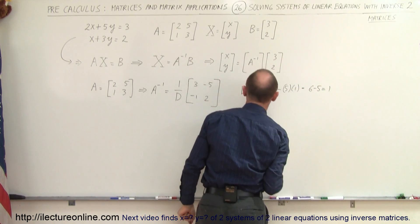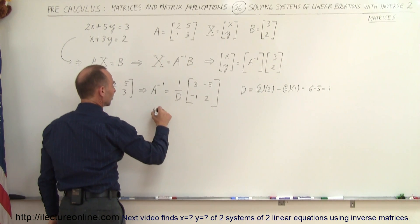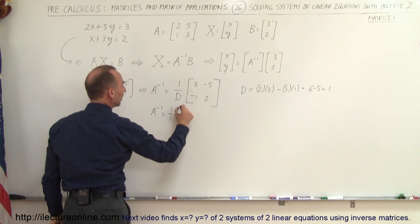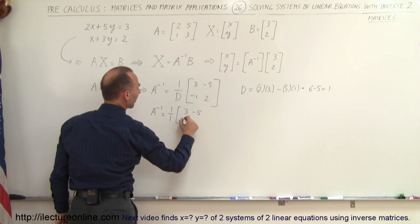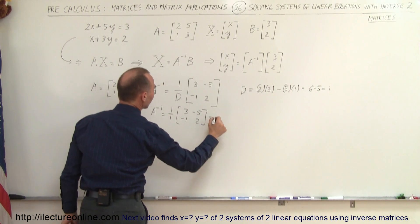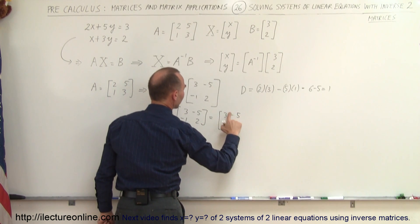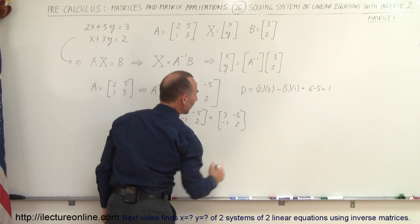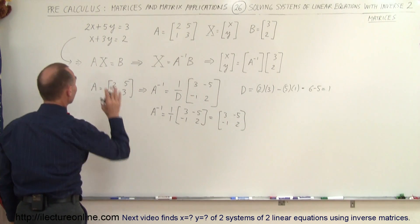The determinant equals 6 minus 5, which is equal to 1. Therefore, the inverse of the matrix is equal to 1 divided by 1 times the matrix 3, minus 5, minus 1, and 2 — which means it's simply the matrix 3, minus 5, minus 1, and 2.